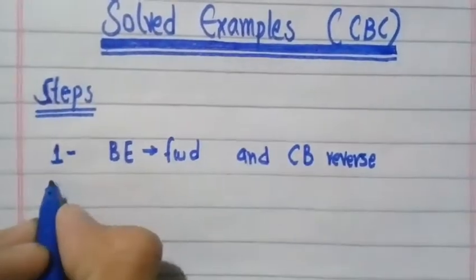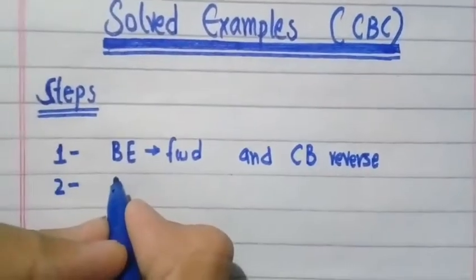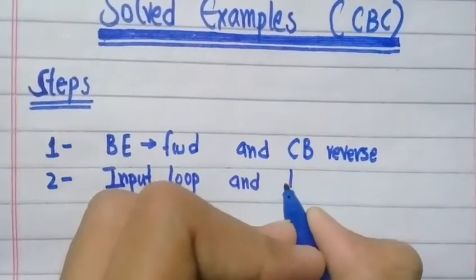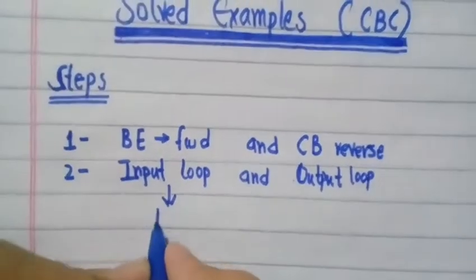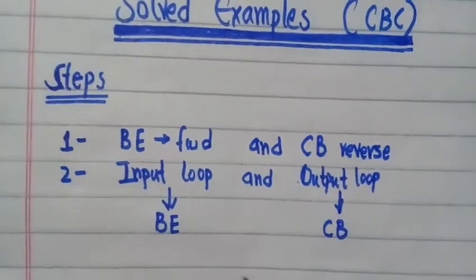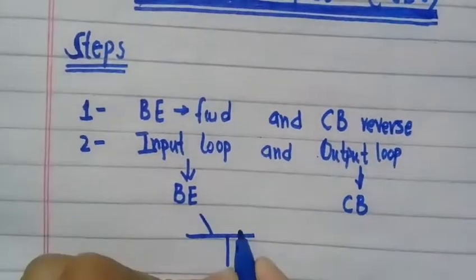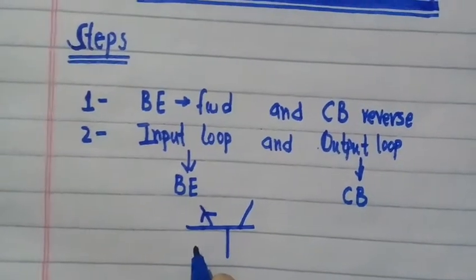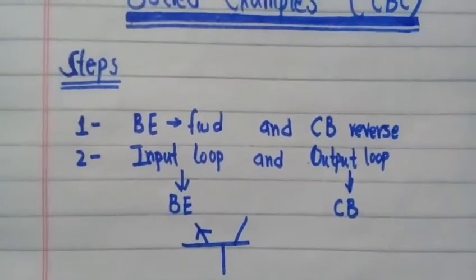The second step is that to solve any example of common base configuration, you first have to analyze its input loop and then its output loop. In the input loop, the base-emitter junction is present. In the output loop, the collector-base junction is present. The base terminal is common between the collector and the emitter, and common between the input loop and the output loop — hence it is called common base configuration.